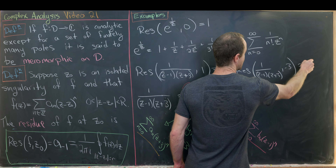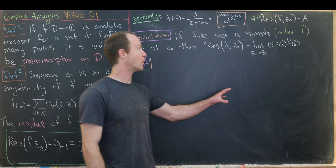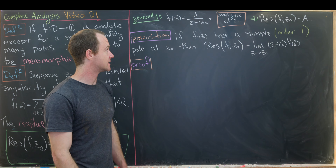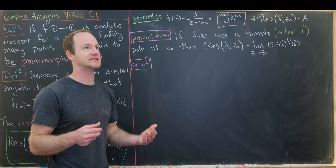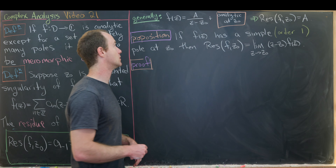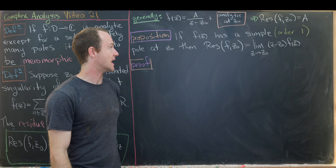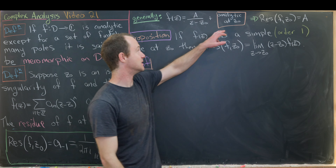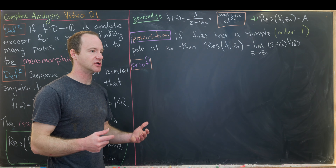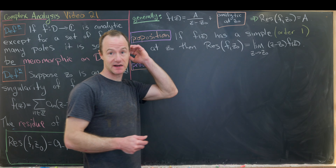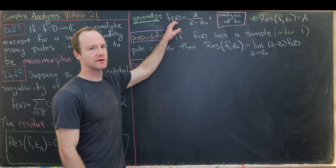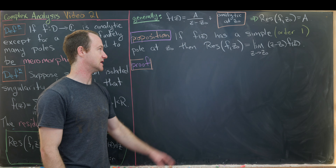This example motivates our first trick. If we can write f(z) as A/(z − z₀) plus a function analytic at z₀, then the residue of f at z₀ is equal to A, because the analytic part contributes no negative powers of (z − z₀) in the Laurent expansion. This occurs when we have a simple pole at z₀, leading us to the following proposition.